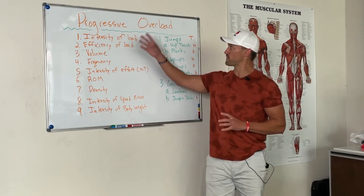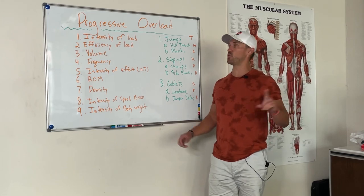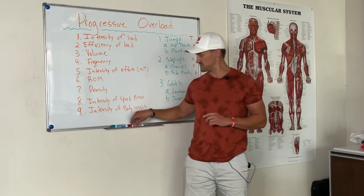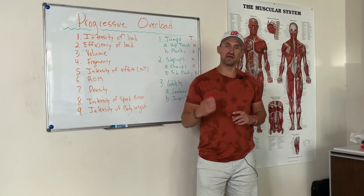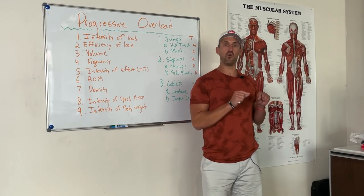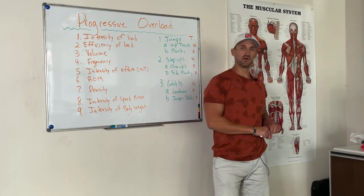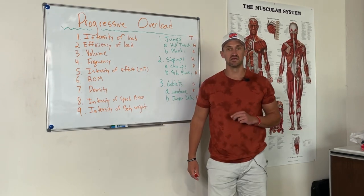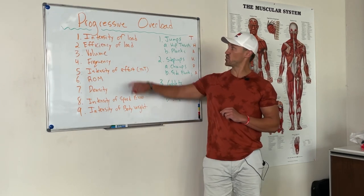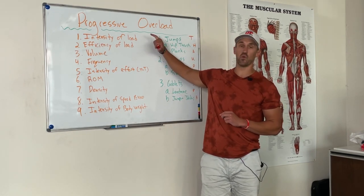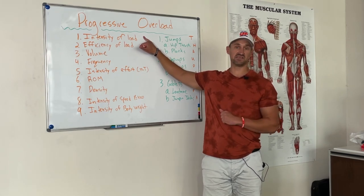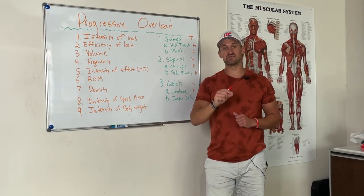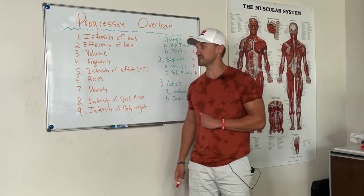So let's go over progressive overload. Easiest one, number one: intensity of load. That's going to be a five-pound weight, I do it for 10 reps — workout one. Workout two, which is on Wednesday, non-consecutive days, I'm going to do the weight five or two-and-a-half pounds heavier. The intensity of the load is progressively getting heavier.